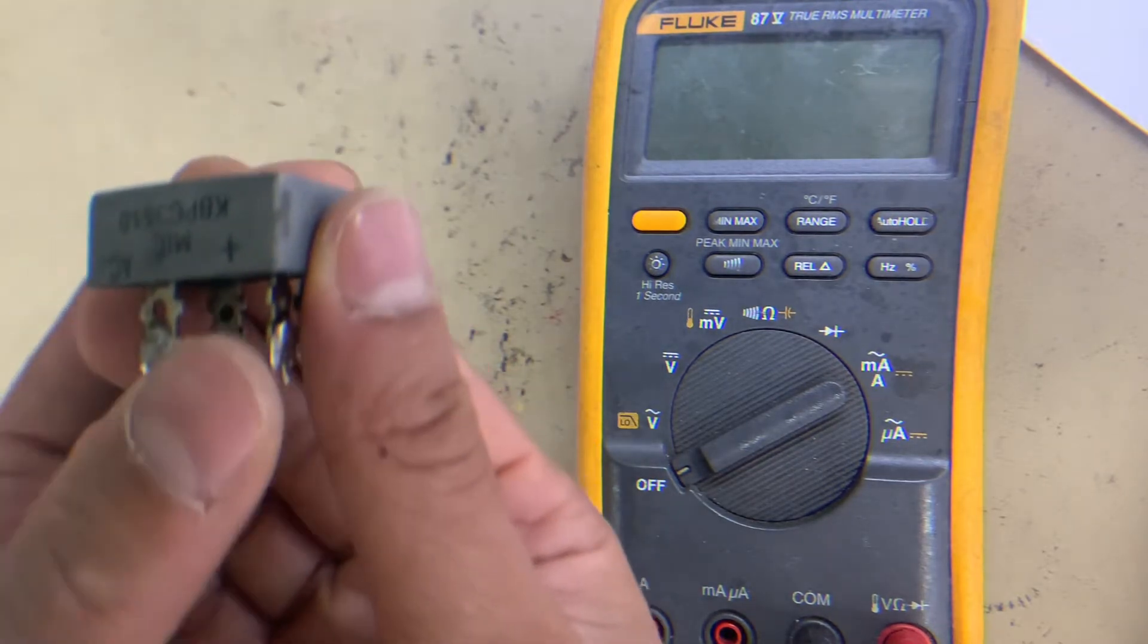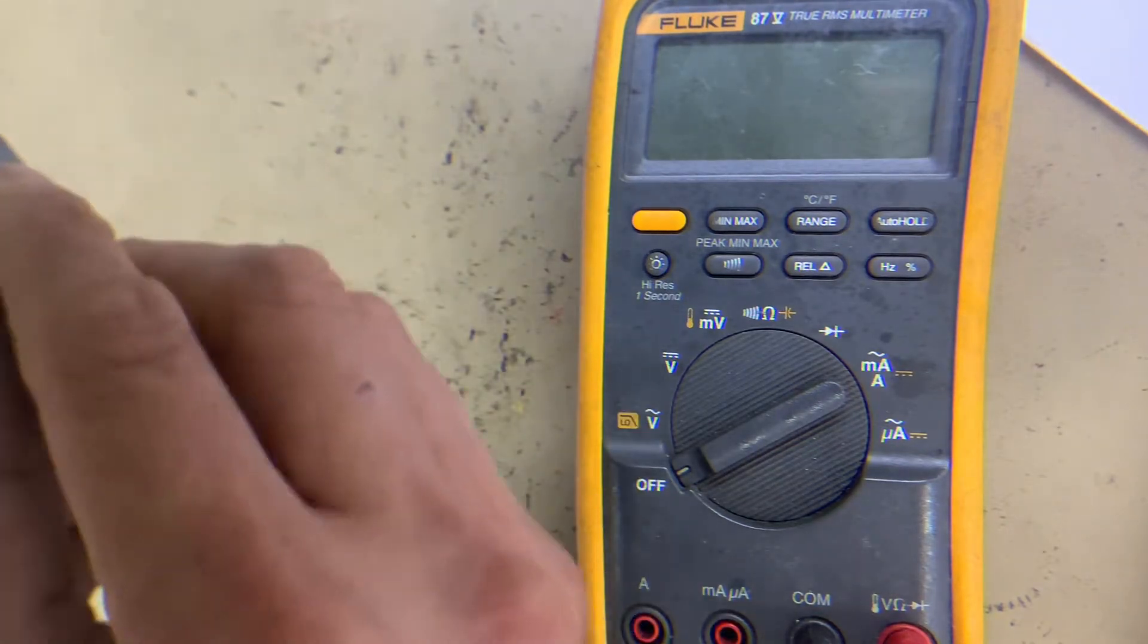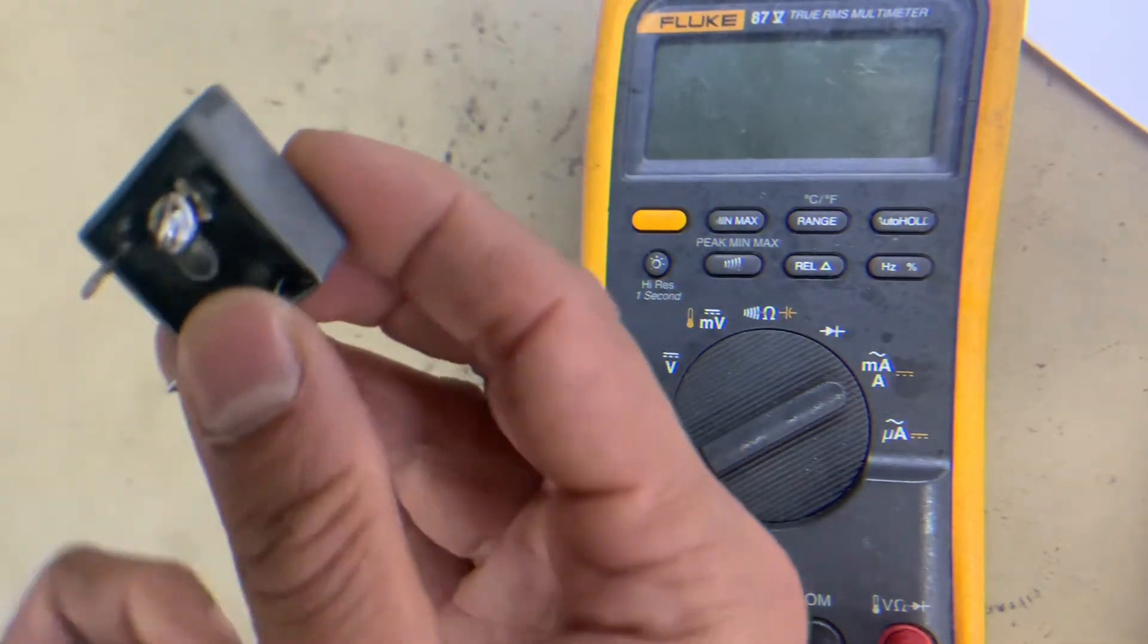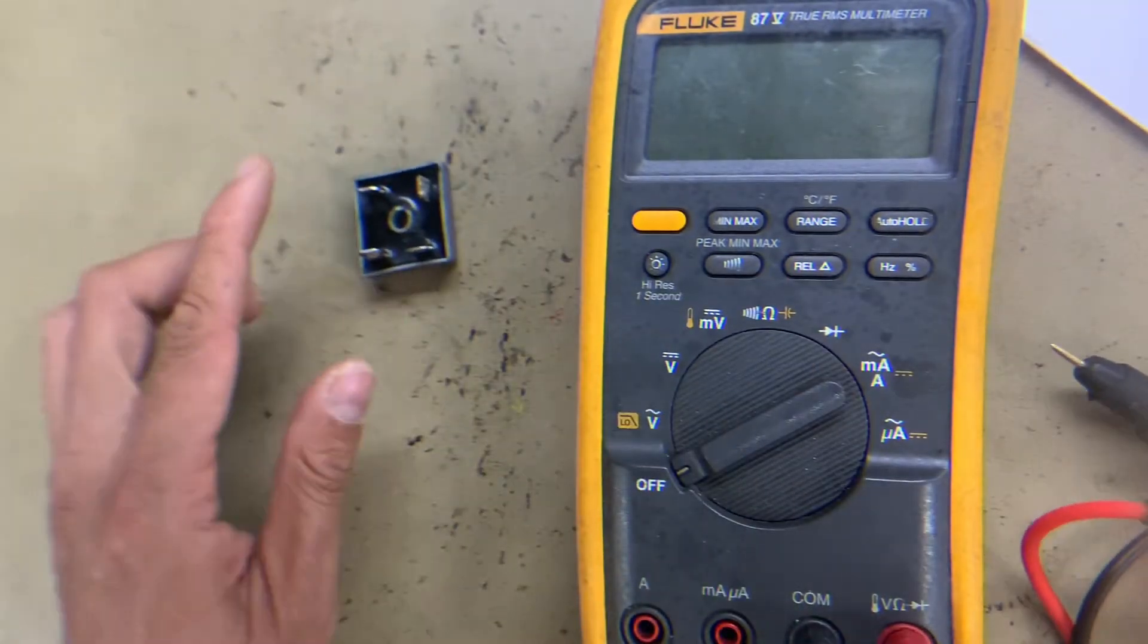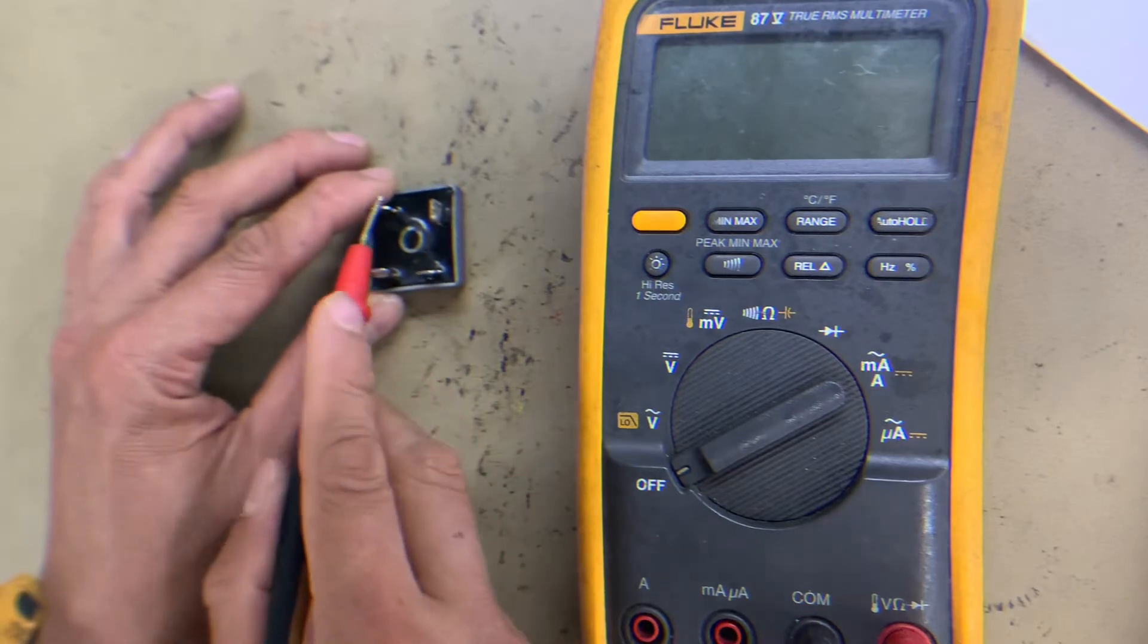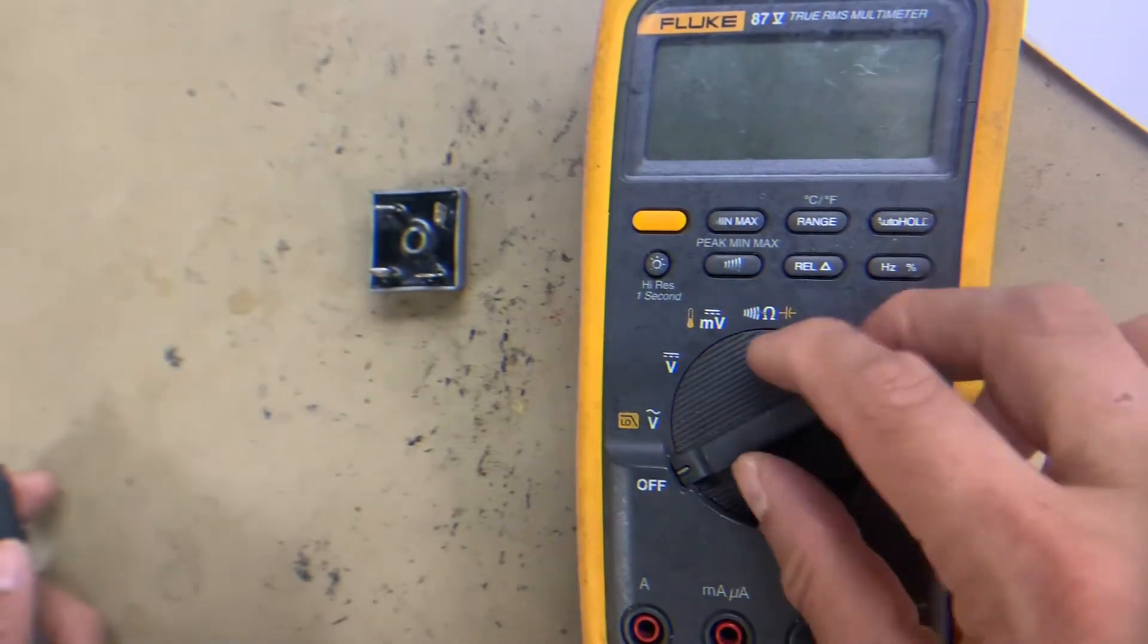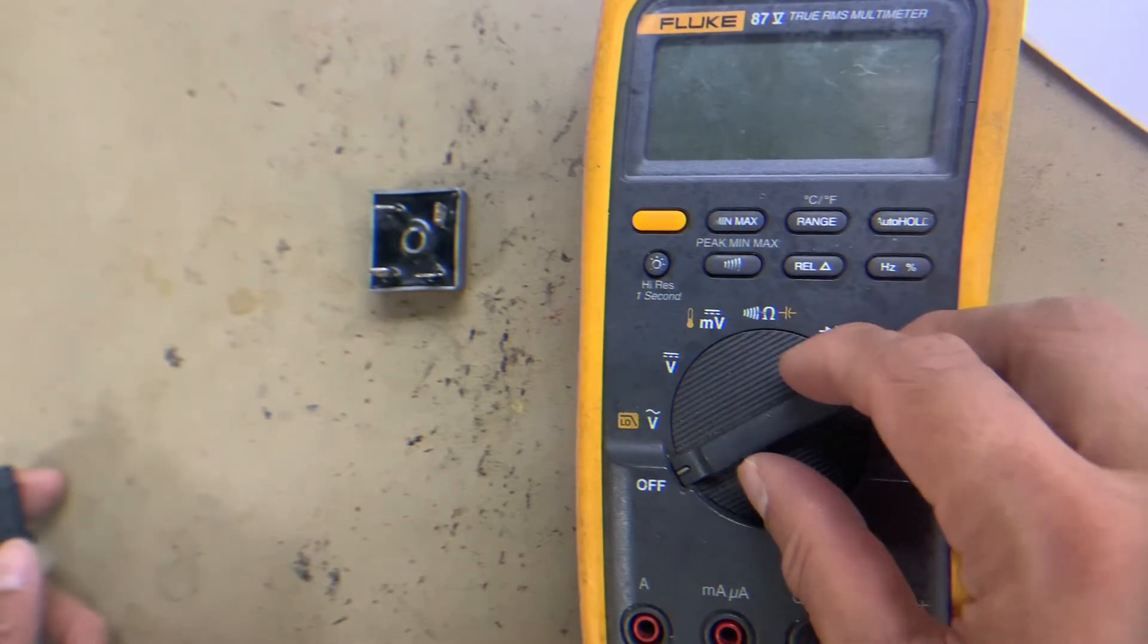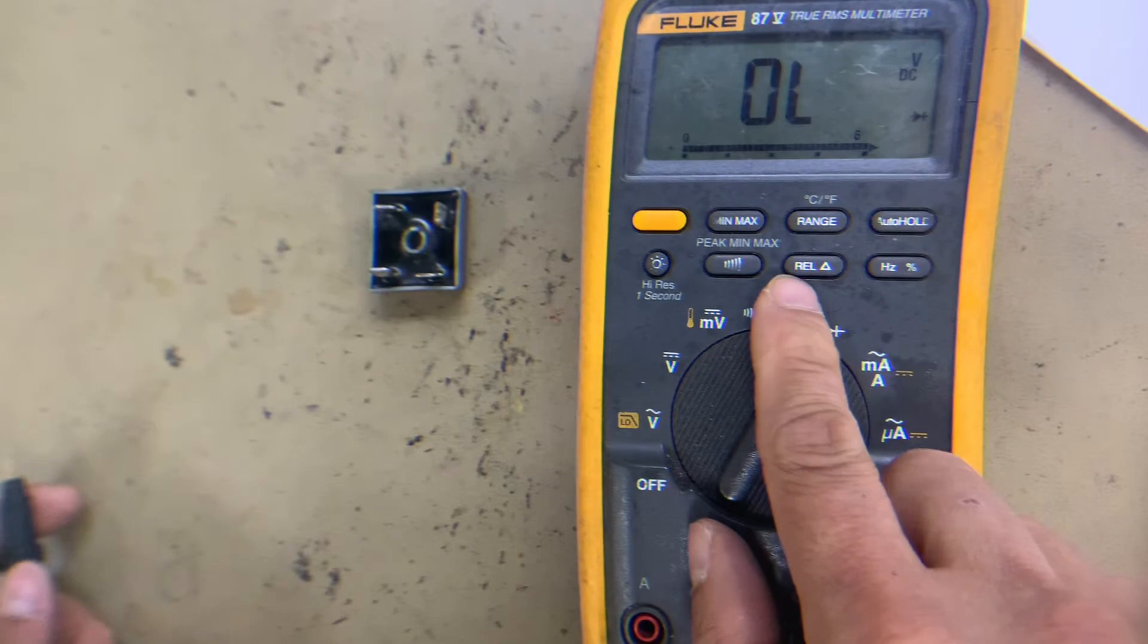Let's start the test. First, let's check the first diode here. This diode. Let's calibrate our Fluke multimeter here in diode test, and let's start the test.